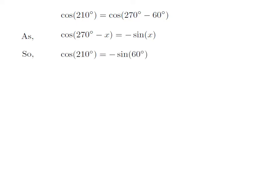Let us apply the above identity for cosine of 210 degrees. Here, x is 60 degrees, so cosine of 210 degrees is equal to minus sine of 60 degrees.